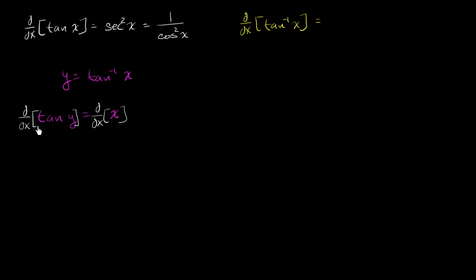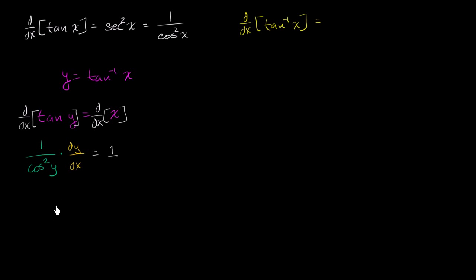On the left-hand side, we can just apply the chain rule. The derivative of tangent of y with respect to y is going to be secant squared of y, which is the same thing as 1 over cosine of y squared. When applying the chain rule, it's going to be that times the derivative of y with respect to x. On the right-hand side, the derivative of x with respect to x is just 1. So to solve for dy/dx, we multiply both sides by cosine squared of y, giving us dy/dx equals cosine squared of y.